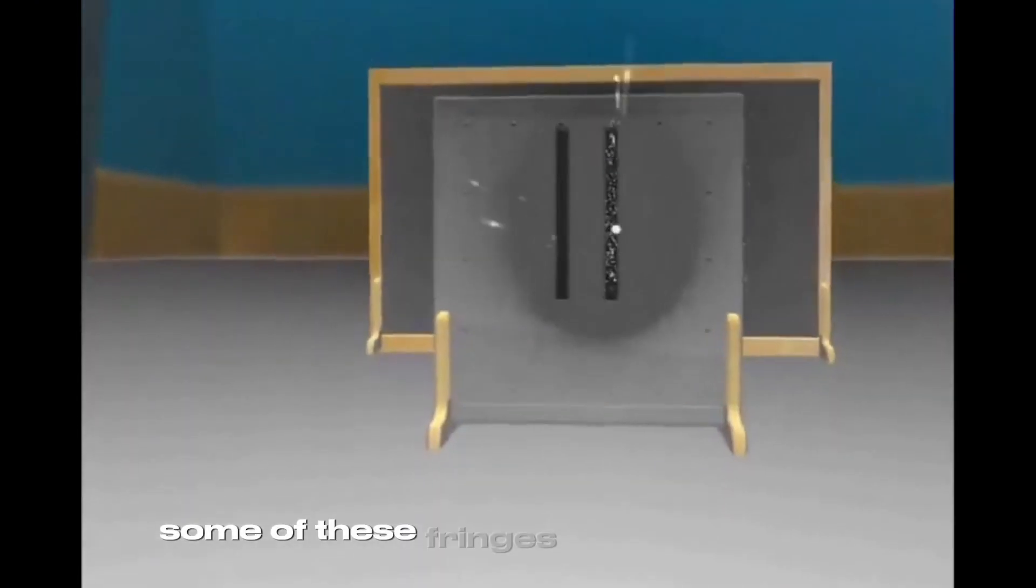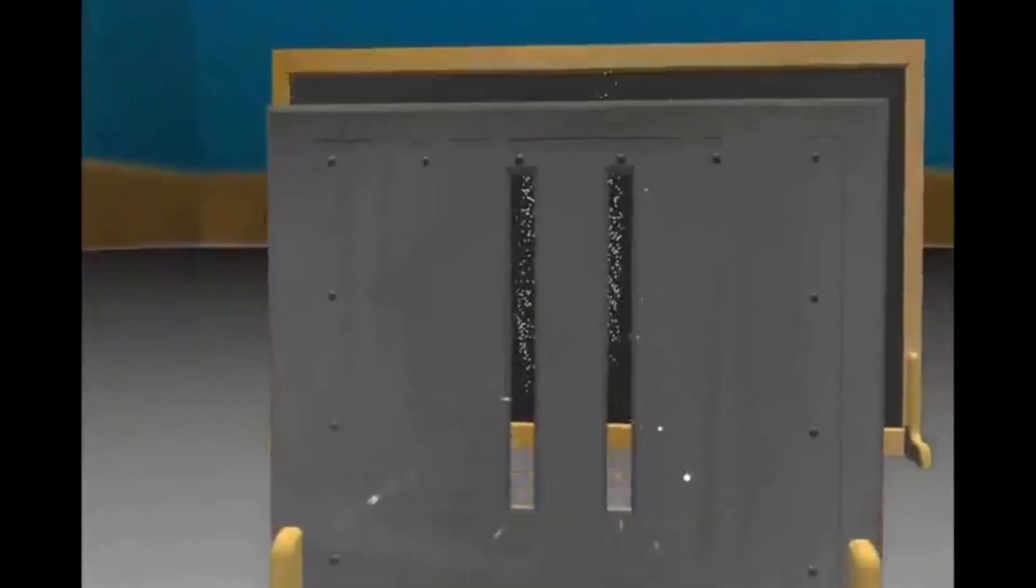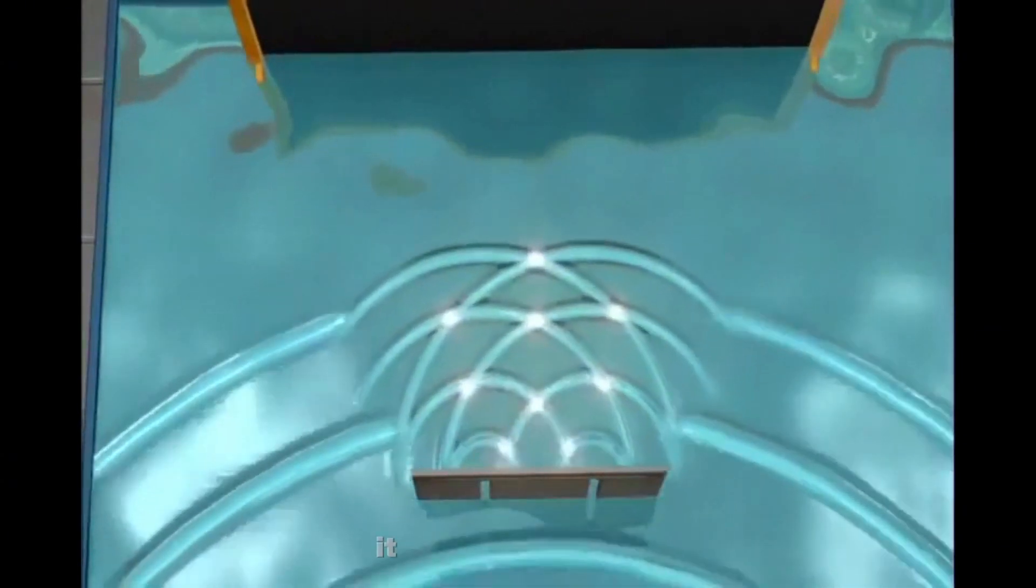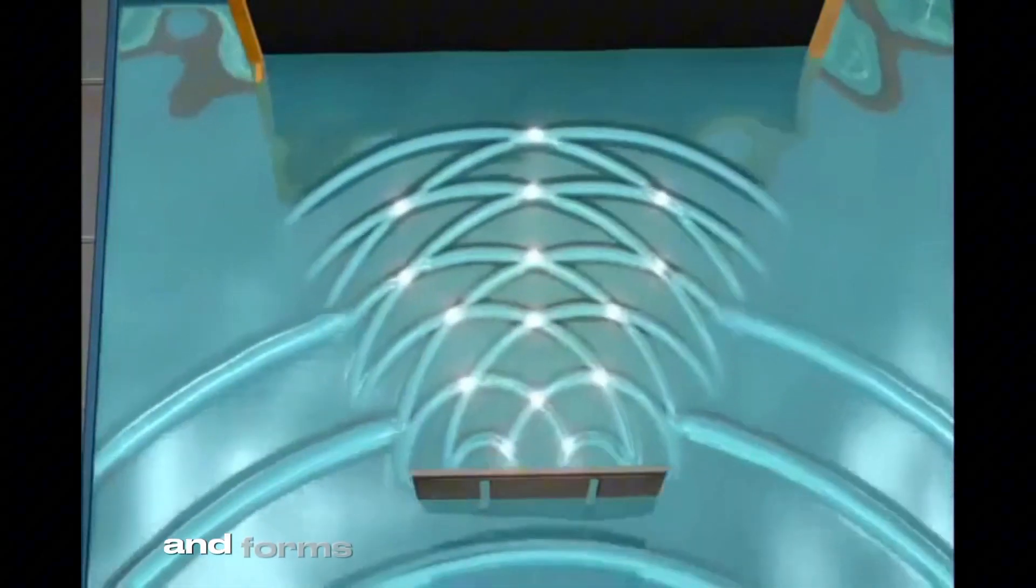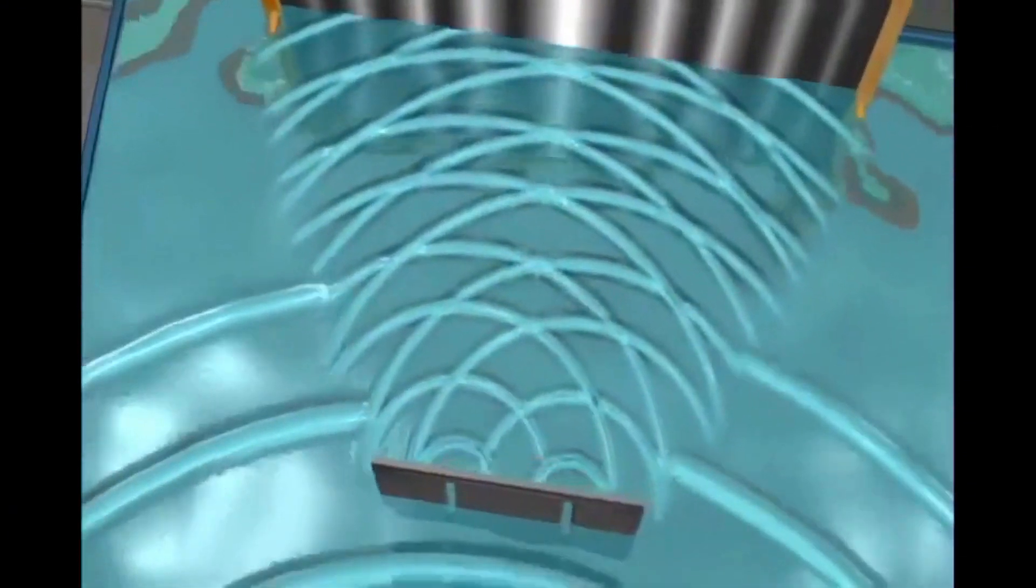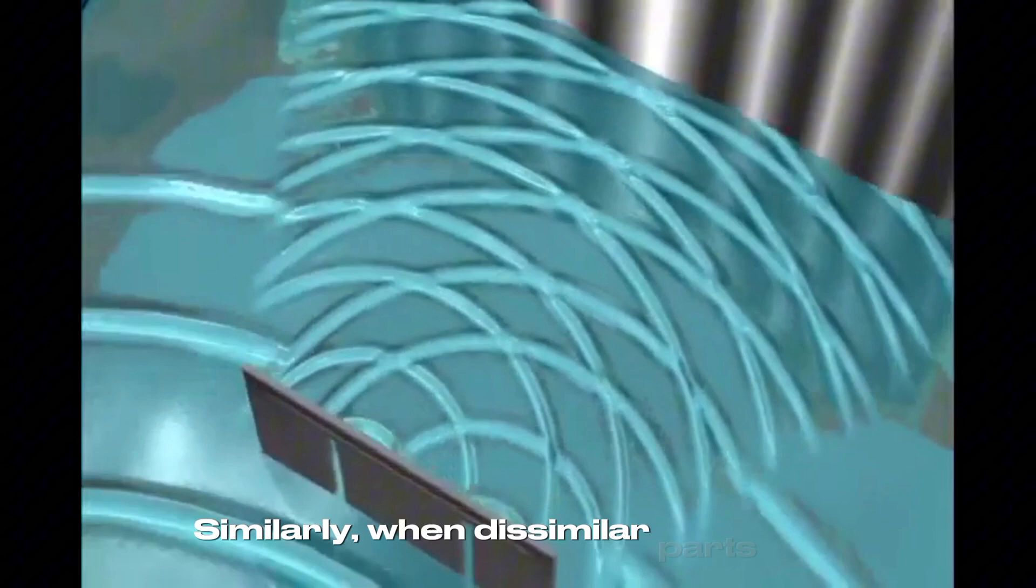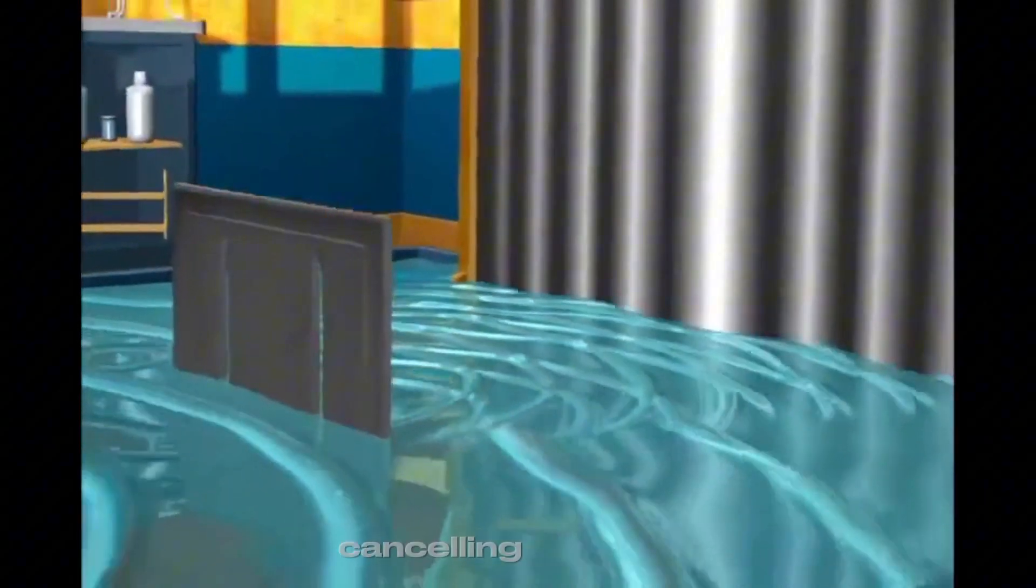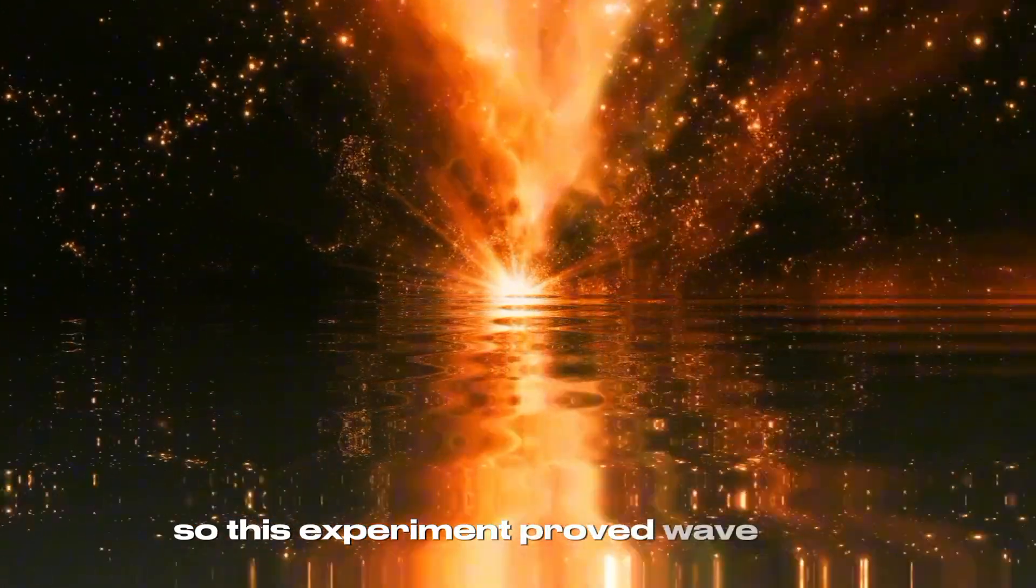Some of these fringes were brighter than others. Just like waves, when similar elevated parts of the waves collide, it adds to its value and forms a bright pattern on the screen. Similarly, when dissimilar parts of the wave collide, it results in dark patches canceling their effect. So, this experiment proved wave nature of light.